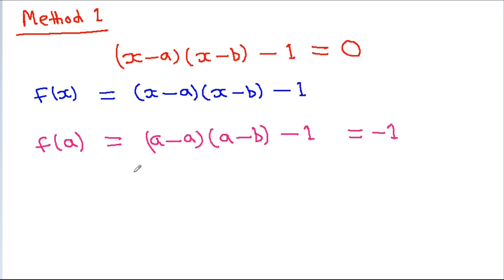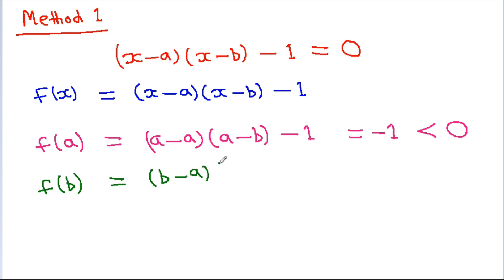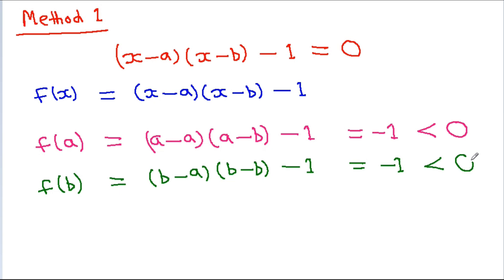So we can say that f(a) is less than 0. Now if we find f(b), we get (b-a)(b-b) minus 1. Here b minus b will be 0, so we get minus 1, and here also minus 1 is negative. So f(b) is less than 0. Now if we draw the graph of f(x), since f(x) is a quadratic equation, the graph will be a parabola.